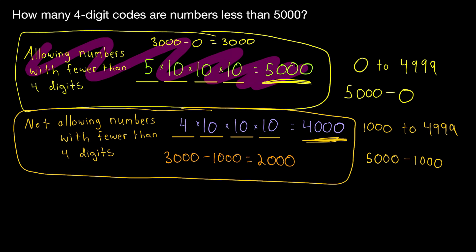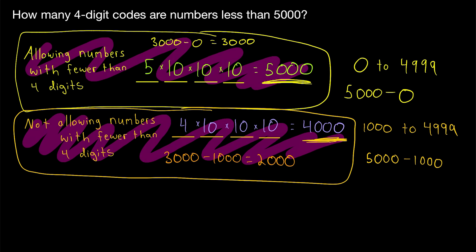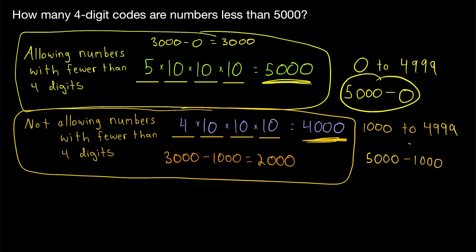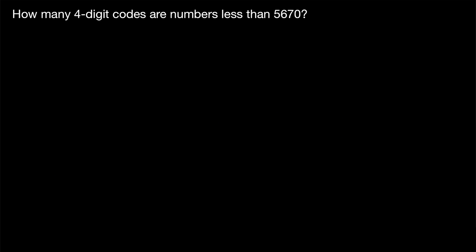All of this is pretty straightforward as long as you understand the subtle difference between these two situations. The ways that we solve this problem — either the common multiplication method or this simple subtraction method — are both pretty easy. But the importance of the subtraction method really comes in with a situation like this: what if we were trying to count the number of four-digit codes that represent numbers less than 5,670? The key difference here is that we just don't have a bunch of zeros after the first digit.